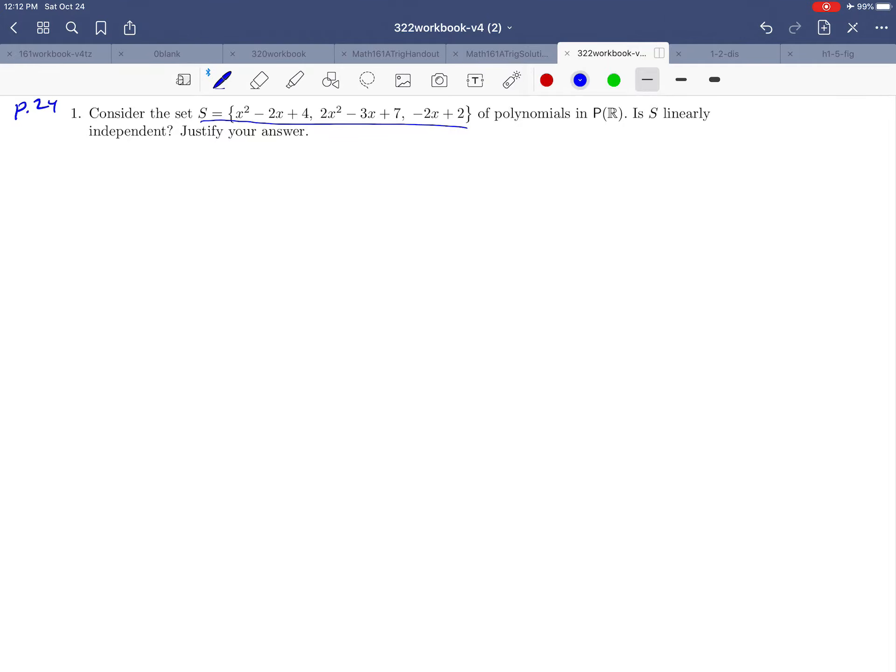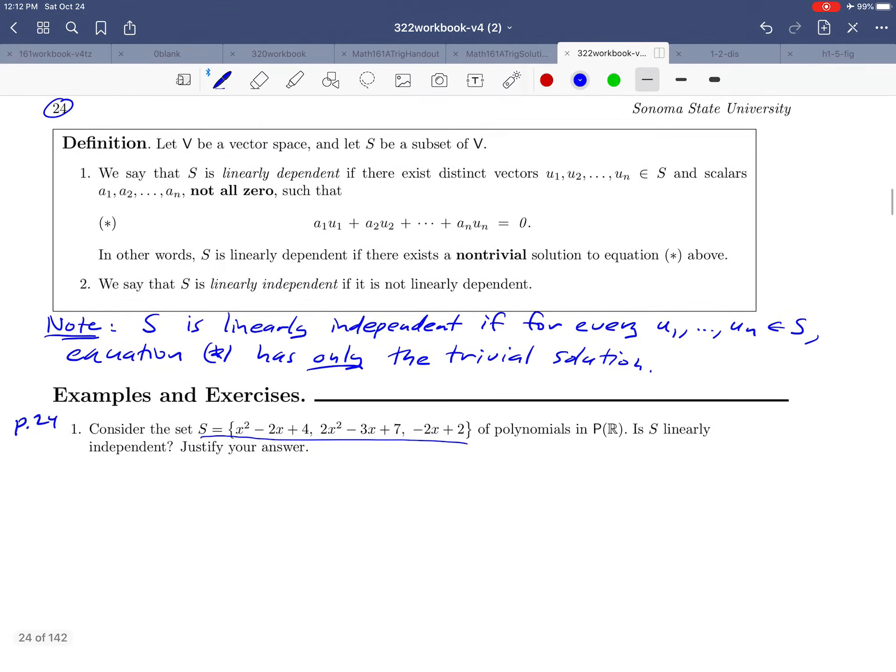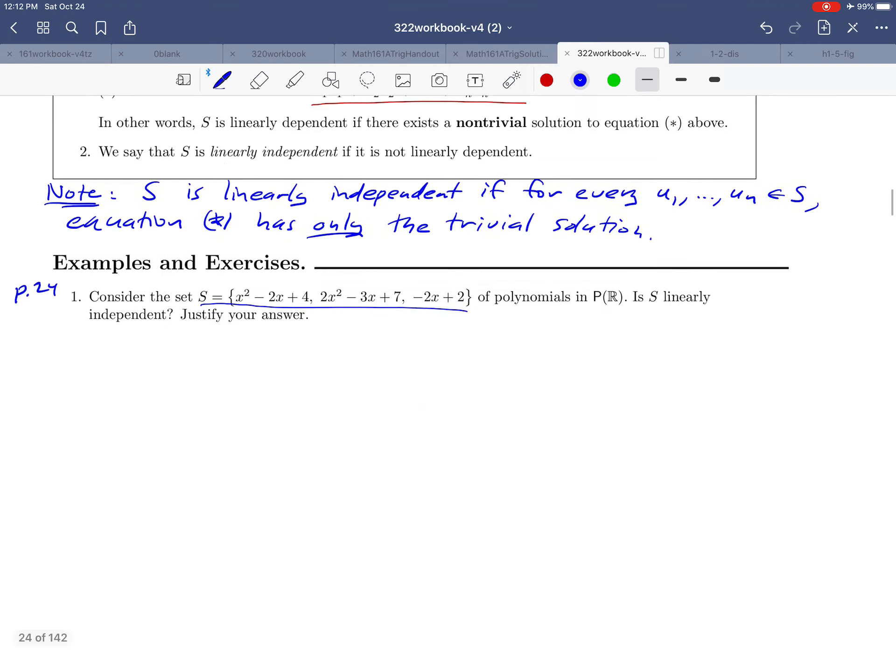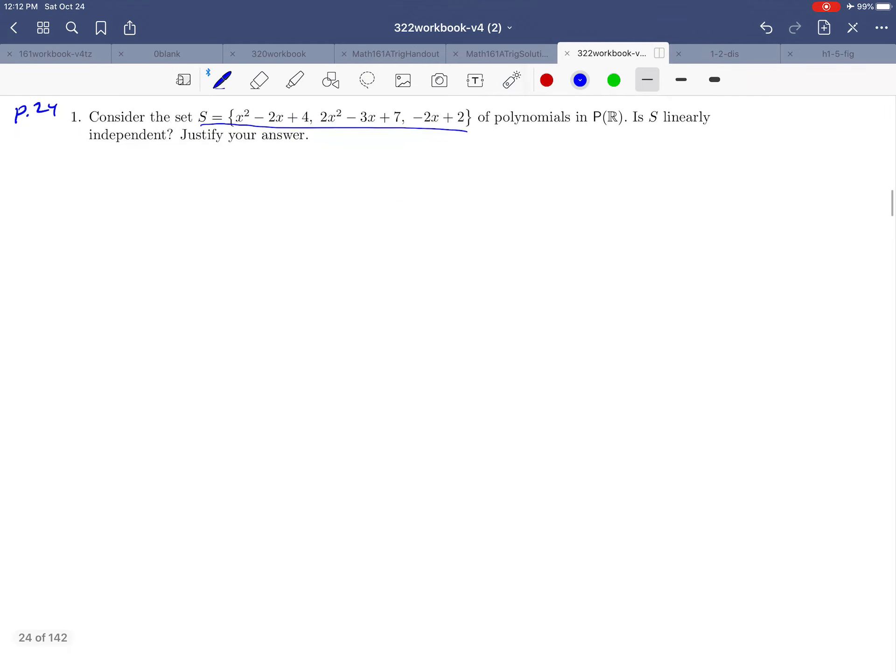According to our definition of linear independence, we can always answer a question like that by starting here, forming a linear combination of the things in our set and setting it equal to the zero vector. So let's do that. So we'll take A times X squared minus 2X plus 4 plus B times 2X squared minus 3X plus 7 plus C times negative 2X plus 2.